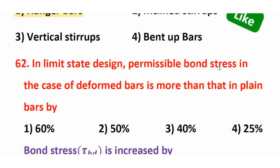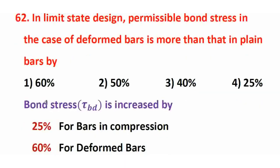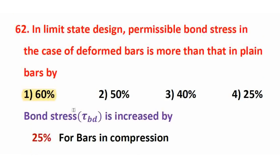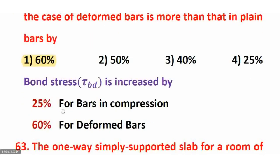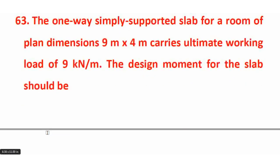Next question: In limit state design, permissible bond stress for deformed bars is more than that for plain bars by? The right answer is 60%. For HYSD (deformed) bars, bond stress increases by 60% compared to plain bars. For bars in compression, bond stress increases by 25%. Per IS456: multiply by 1.25 for compression, multiply by 1.6 for deformed bars.